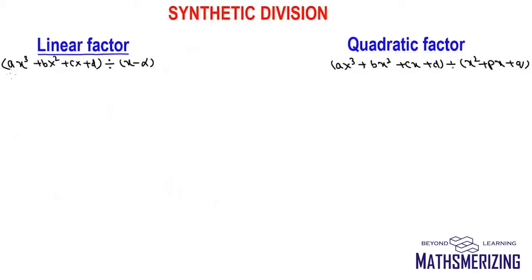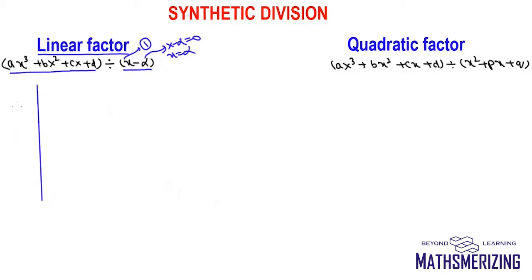Suppose I need to divide ax³ + bx² + cx + d with x minus alpha. For a linear factor, the coefficient of x must be 1, and for x minus alpha its root will be x equals alpha. I will draw two lines, write alpha on the left, and on the right write the coefficients in order: a, b, c, and d.